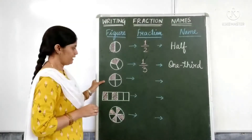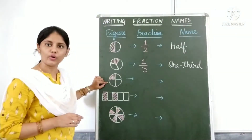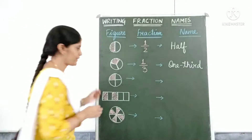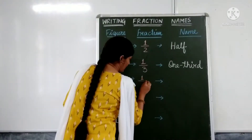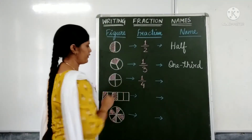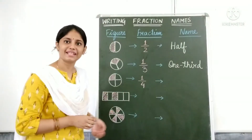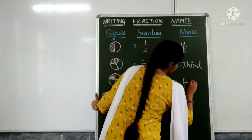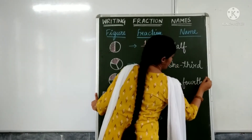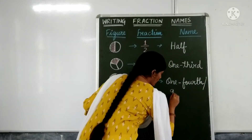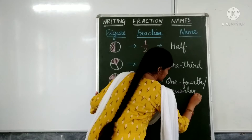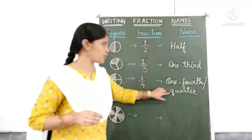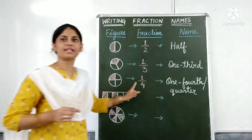Moving to the third figure. Here we have a circle divided into 4 equal parts and 1 part is shaded. The fraction for the shaded part is 1 by 4. Its name is one fourth, or it can also be named as quarter. One part out of 4 represents a quarter, so it can be written as one fourth or quarter — both represent 1 by 4.